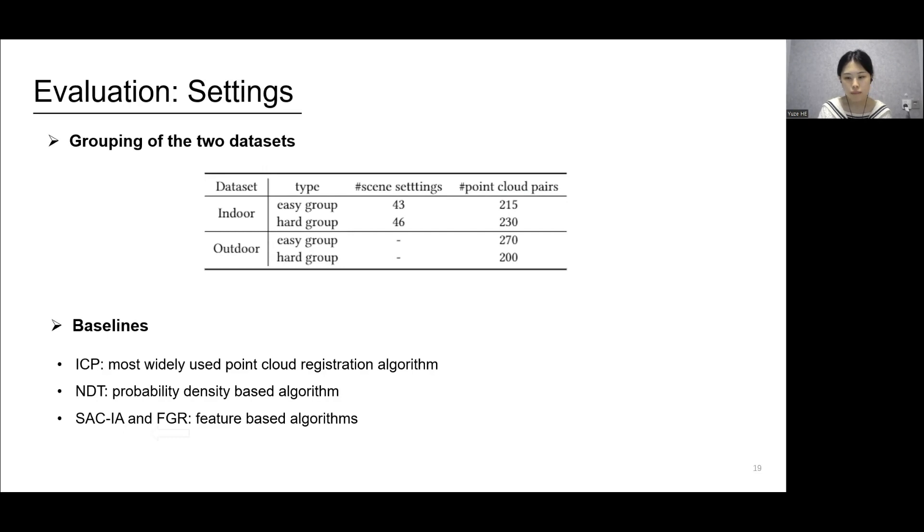We adopt the metrics relative rotation error and relative translational error to compare the performance with other baselines. The relative rotation error and relative translational error measure the point cloud registration errors between the estimated transformation and the ground truth transformation.